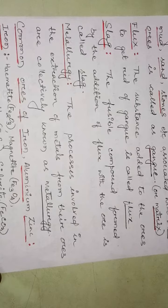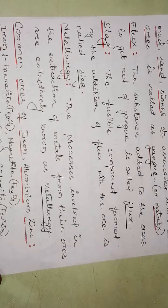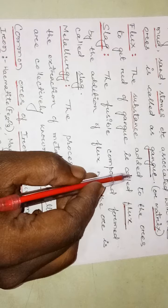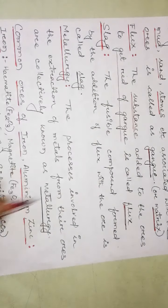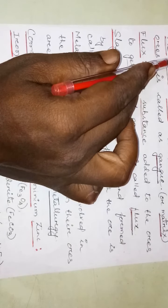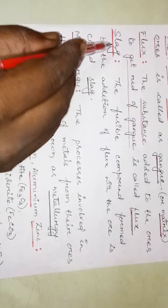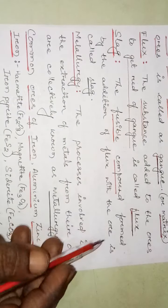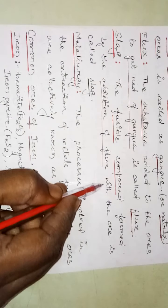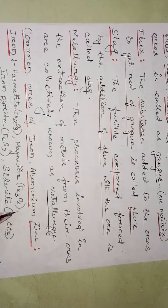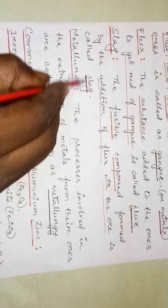What is flux? The substance added to the ore to get rid of the gang is called flux. What is slag? When the flux is added to the ore, a fusible substance is formed — that is called slag. The fusible compound formed by the addition of flux with the ore is called slag.